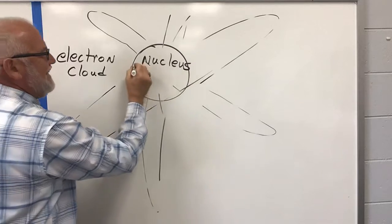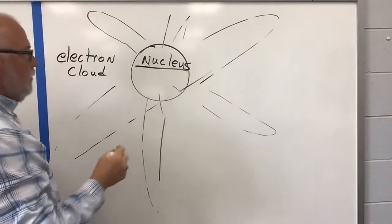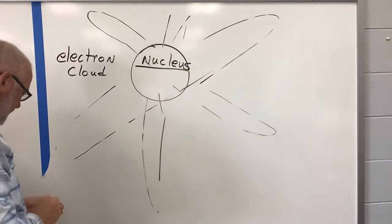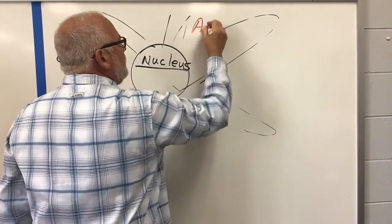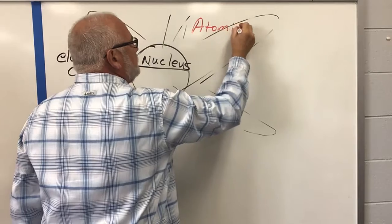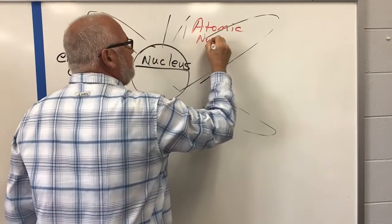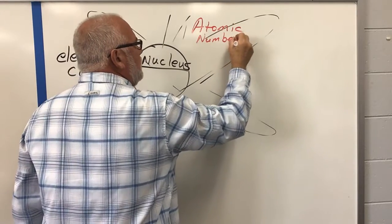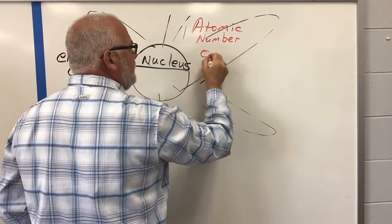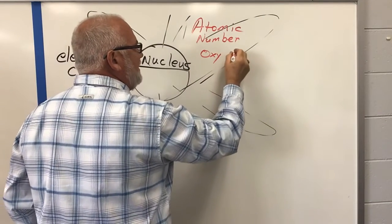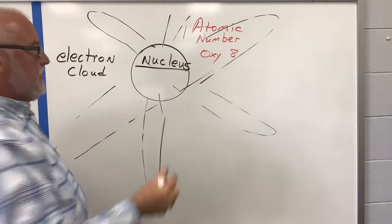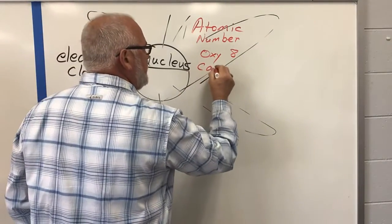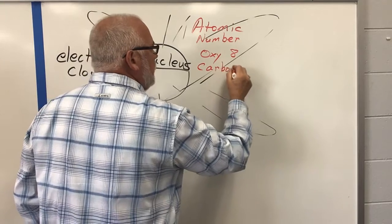Well, let's take a closer look at what's in the nucleus. The first thing that you need to know that's in the nucleus is the atomic number. So, for example, oxygen's atomic number is eight. What does that mean? And carbon's atomic number is six. What does that mean?